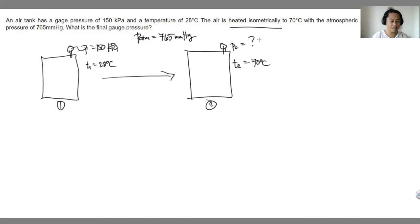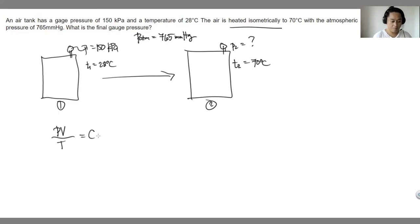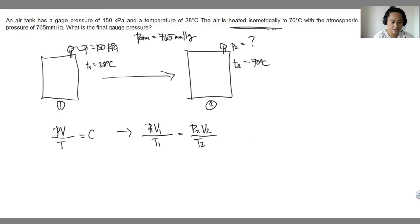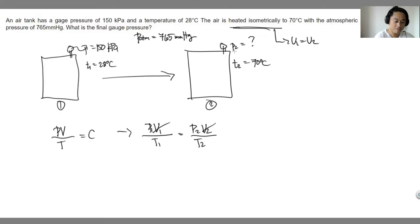We can treat this as an ideal gas problem. Recalling the combined ideal gas law, it states that pressure times volume over temperature is constant throughout the process. So P1·V1/T1 equals P2·V2/T2. The process is isometric, meaning volume is constant — so V1 equals V2, and we can cancel those terms out.